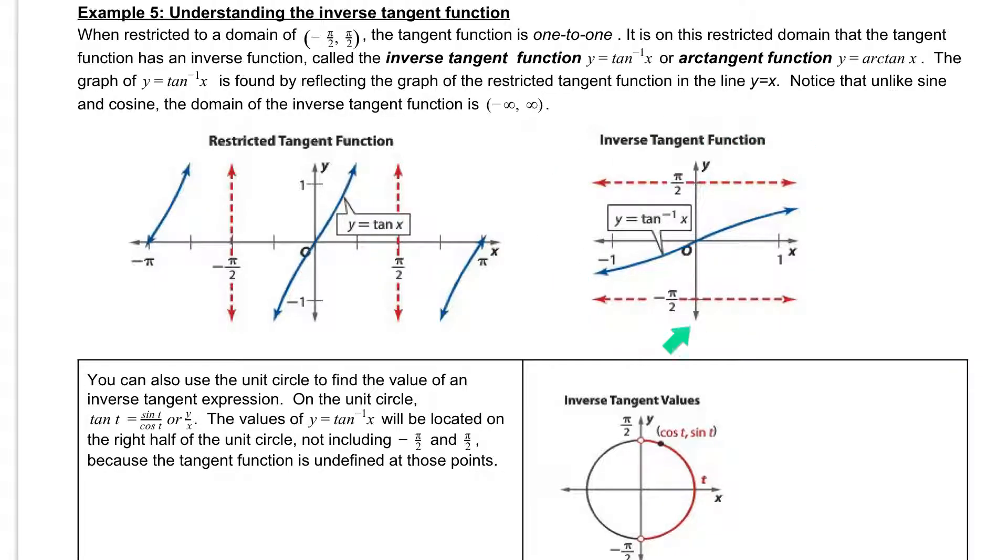So if we take a look at the inverse tan function, our domain is going to go from negative infinity to positive infinity, and our range is going to be restricted between negative pi over 2 and pi over 2. So let's write that down really quick. So for our inverse function, the domain goes from negative infinity to positive infinity, and our range goes from negative pi over 2 to positive pi over 2.